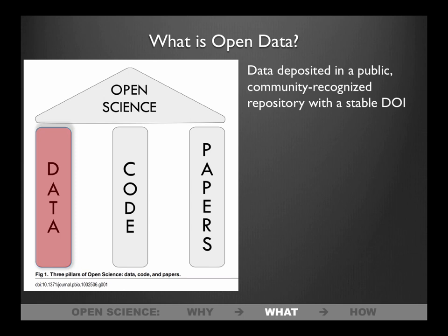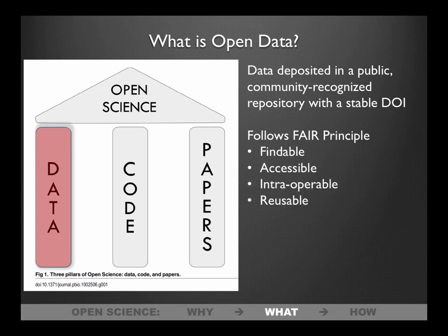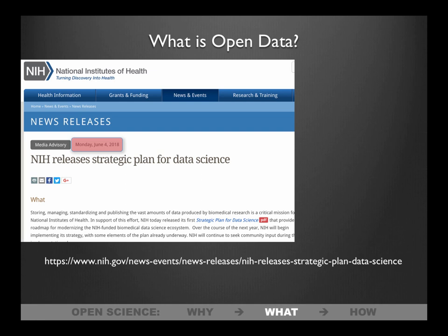Open data is data deposited in a public, community-recognized repository with a stable DOI — a digital object identifier. It's not enough to post data on your lab's webpage or include it in a tweet. You need to think long-term so data can be accessed long after you've left the lab. Repositories are set up with a long-term plan to keep data accessible in perpetuity. Public repositories follow the FAIR principle — an acronym standing for Findable, Accessible, Interoperable, and Reusable. These may sound like synonyms but are all separate things you can get right or wrong. I'd encourage you to read NIH's strategic plan for data science, released last week, which goes over each of these principles.